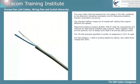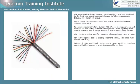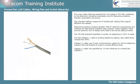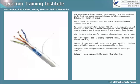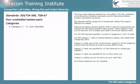TIA 568 Category 1 cable is existing telephone cables, also called rusty twisted pair — that's the stuff that goes into your house. Category 2 cable was 25-pair multi-conductor cables for old key telephone systems. Category 3 cable was specified for 10 Mbit per second Ethernet on twisted pair, also known as 10BaseT. Category 4 cable was specified for the 16 Mbit per second version of token ring. Category 5 cabling was for the future at up to 1000 Mbit per second. The future has arrived, and now all of these categories are obsolete.